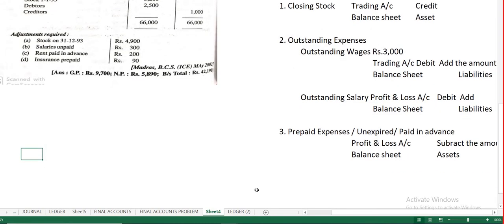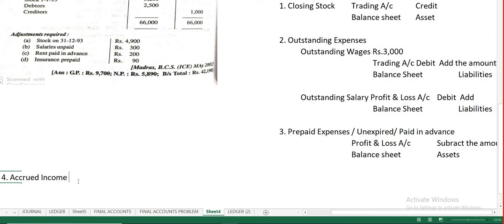Moving to the fourth adjustment — accrued income. Accrued income means you have rendered the service or given the benefit, but you have not yet received the amount. For example, you might earn interest from your bank account or commission, but the amount is yet to be received.